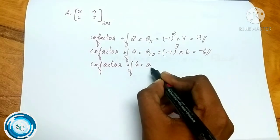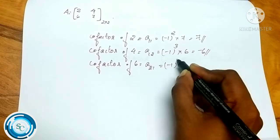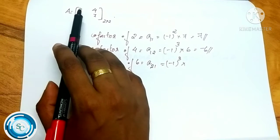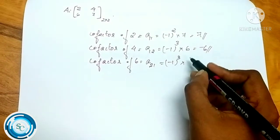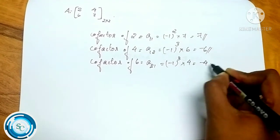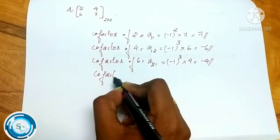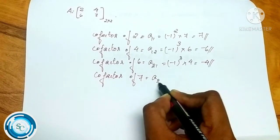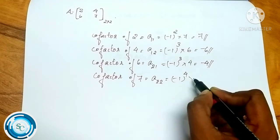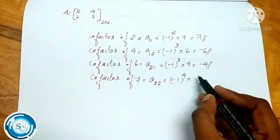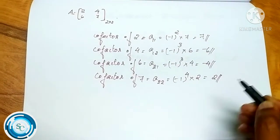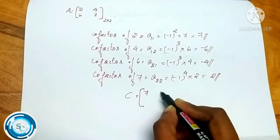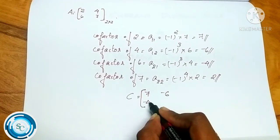The cofactor of element a21 is equal to minus one raised to the power 3, into the minor 6, and eliminating the row and column gives minus 4. The cofactor of element a22 is equal to minus one raised to the power 4, into 7, giving minus 2. So the cofactor matrix is: 7, minus 6, minus 4, 2.